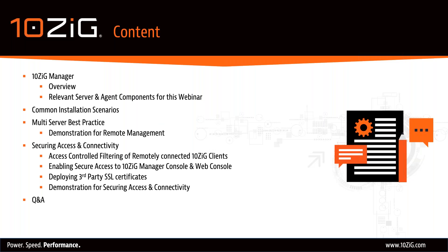Here's a summary of the contents we'll be covering. Firstly, a quick overview of the Tenzing Manager, homing in on the relevant server and agent components. We'll then cover common installation scenarios including on-premise, cloud-based, single-site, and multi-site setup, as well as the remote and home-worker scenario. We'll then provide an overview and demonstration of a multi-server setup. The final section before Q&A focuses on securing access and connectivity, including access filtering, secure privileges to the Tenzing Manager and web console, and assigning an AD-signed or commercial certificate to the Cloud Connector.